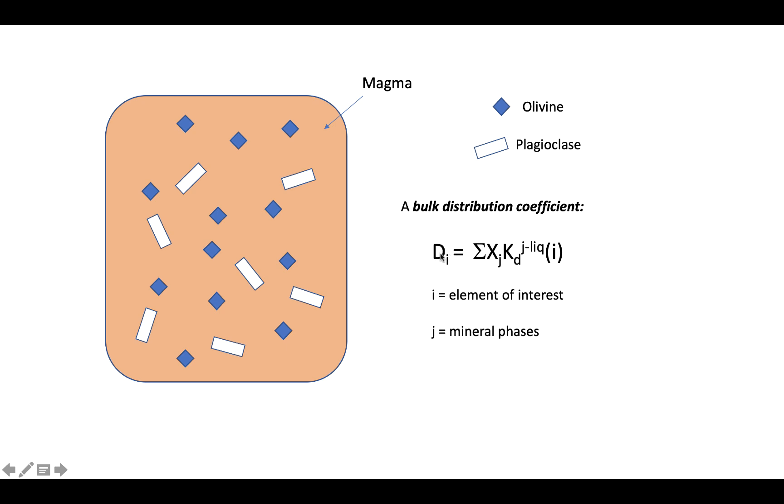These are very important for us for doing calculations of how elements are distributed between different phases. The bulk distribution coefficient is a weighted partition coefficient, where we take the sum of all the partition coefficients for the phases that are present, and we weight them against the amounts.